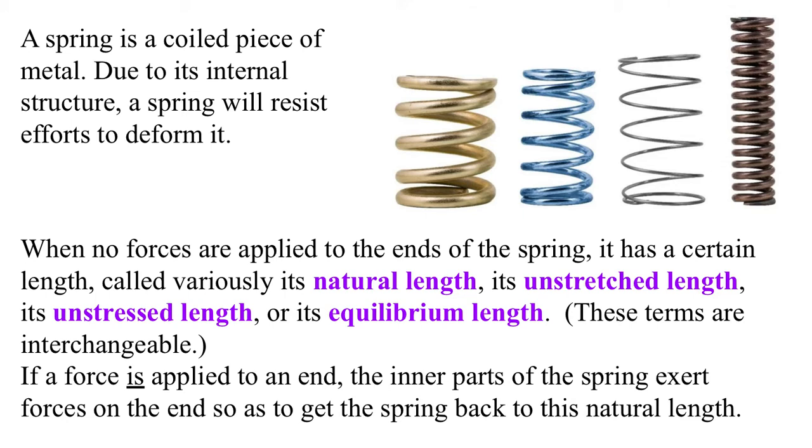If a force is applied to an end, then the inner parts of the spring exert forces on the end so as to get the spring back to its natural length. In fact, if the spring is stretched at all, it exerts that force on both ends to try and return to its natural length. So even if you pull on one end, the spring will pull the other end back, and if it's not attached to anything, then the spring won't stretch, it will just move. If it is attached to something, then it exerts the same force on that something as it is exerting on you.